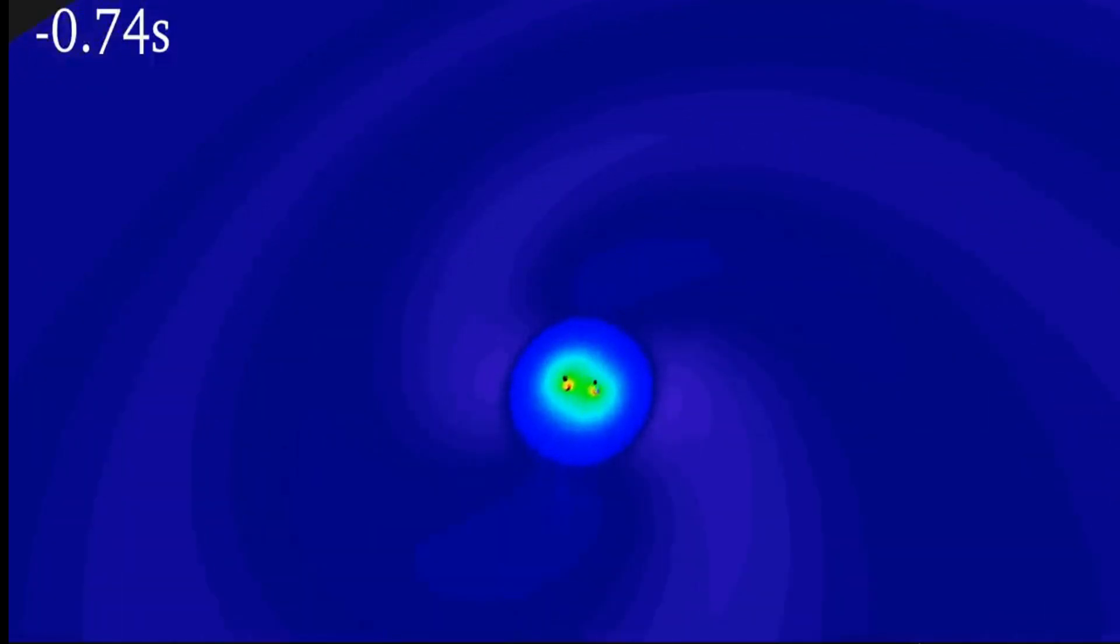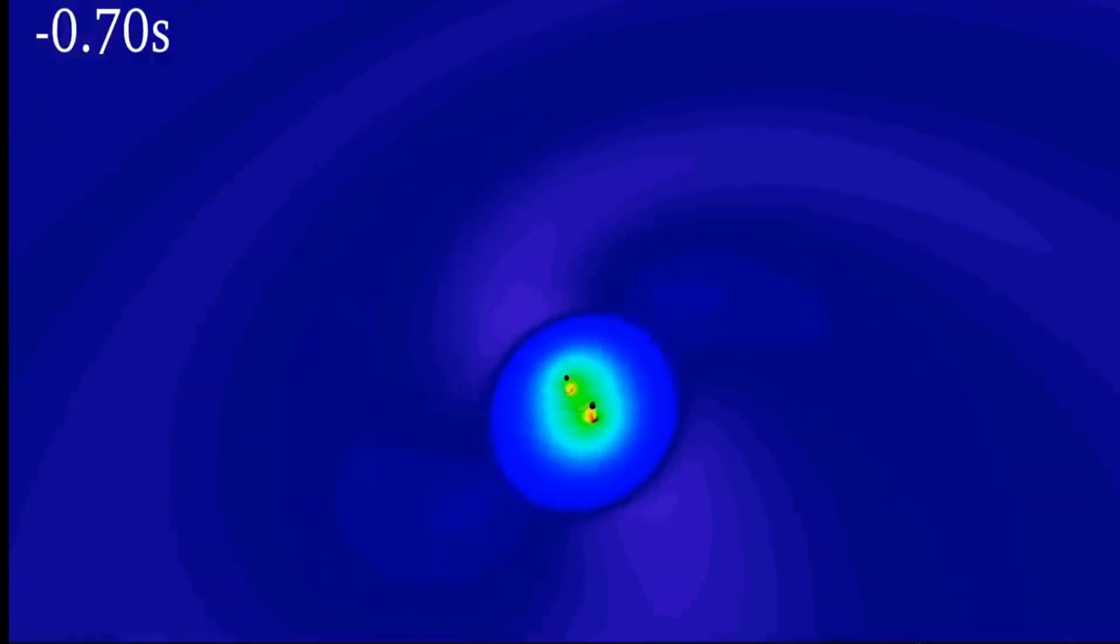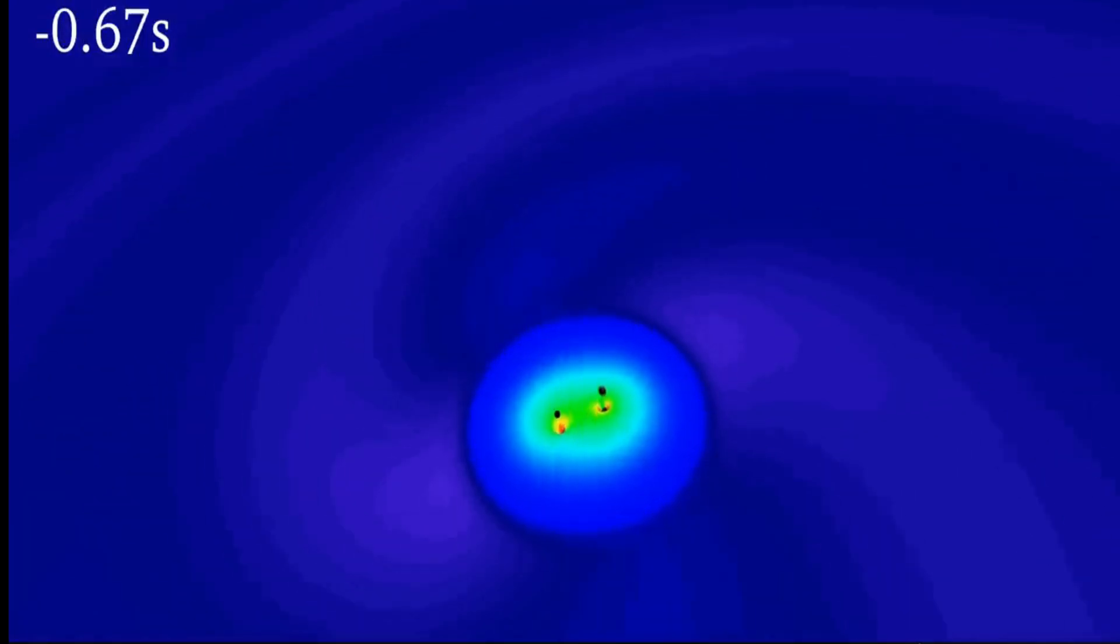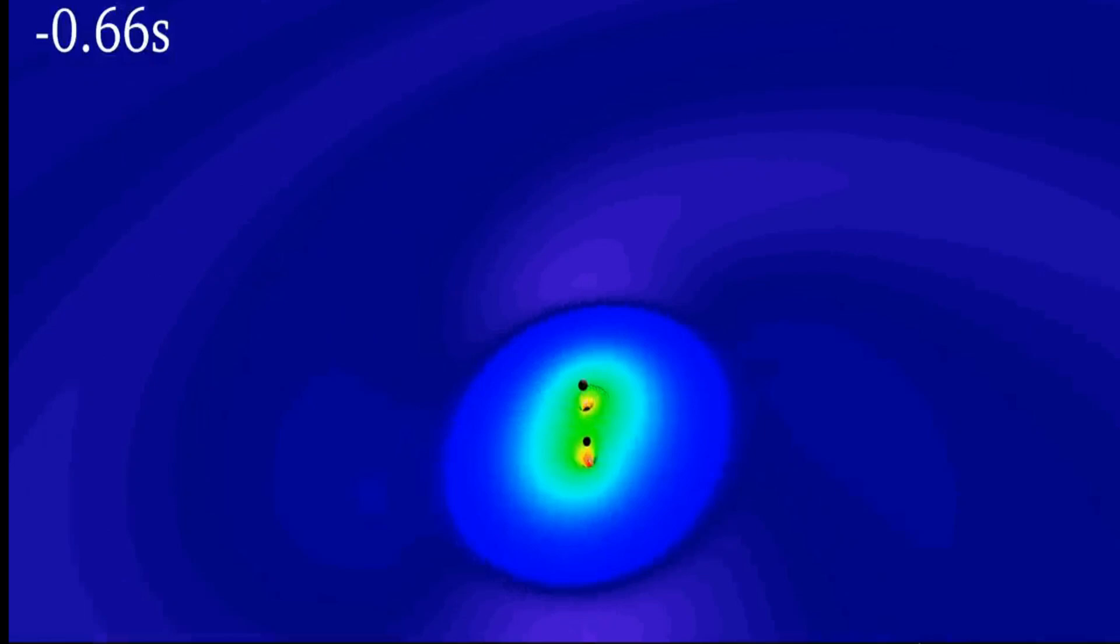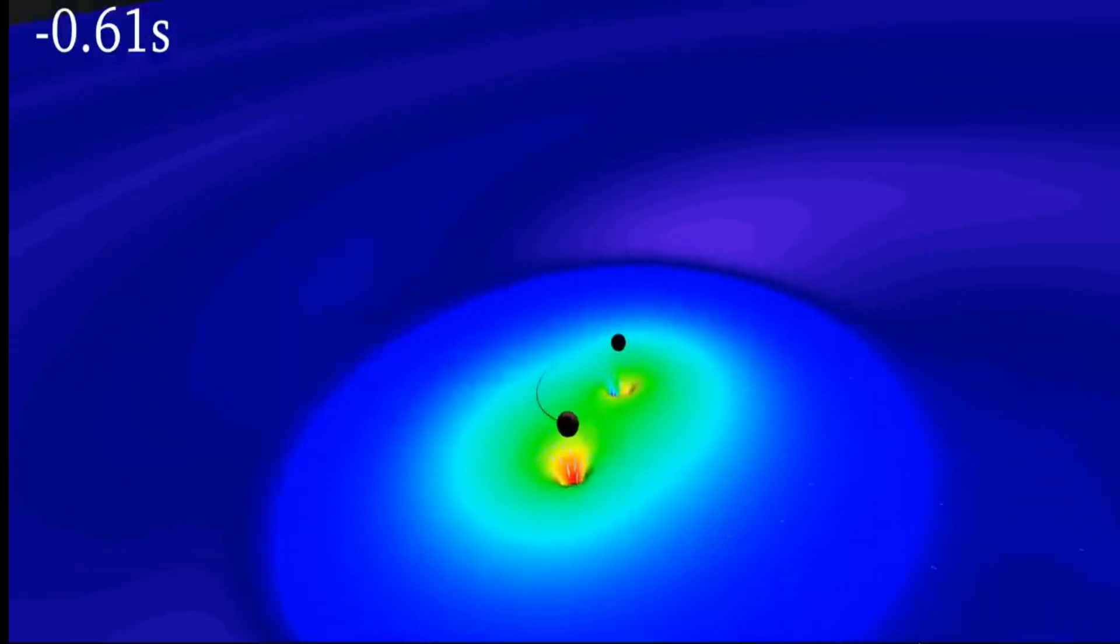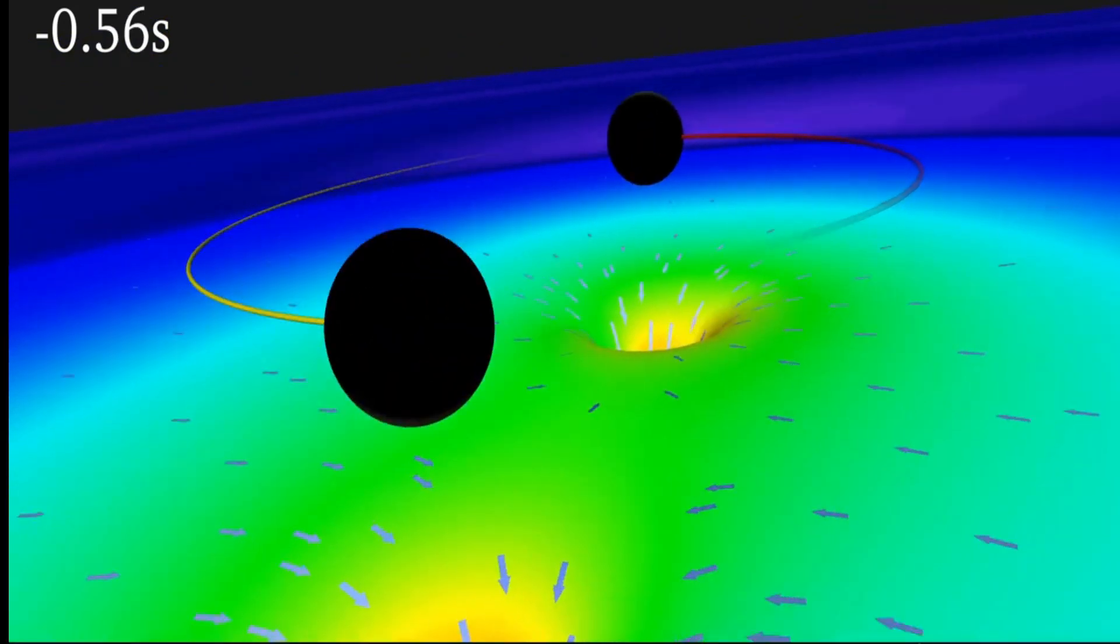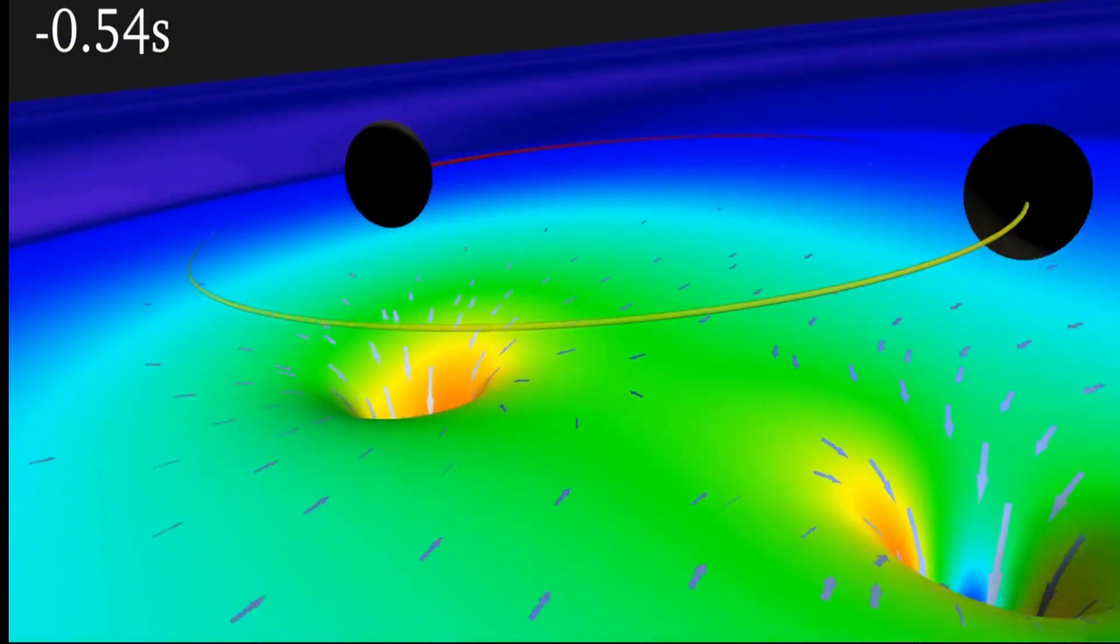This simulation shows the warping of space and time around two colliding black holes observed by the Laser Interferometer Gravitational Wave Observatory on September 14, 2015. LIGO detected gravitational waves generated by this black hole merger. Humanity's first contact with gravitational waves and black hole collisions.